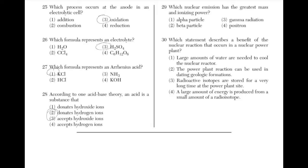Which nuclear emission has the greatest mass and ionizing power? You can look at table O on the periodic table and you will see that an alpha particle has a mass of 4u, while a beta particle, gamma radiation, and a positron have a mass of 0u.